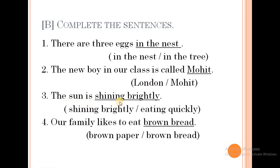The sun is shining brightly. Here, shining brightly and eating quickly are given. So obviously, what is the correct answer? Shining brightly. Sun is there, so along with the sun, you have to write shining brightly.